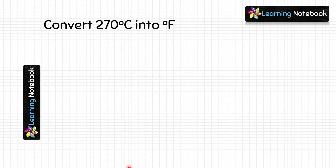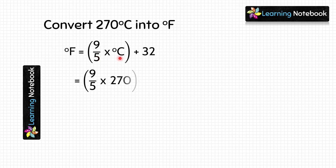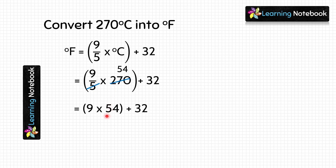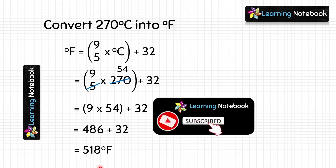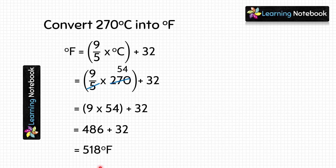Last question: convert 270 degree Celsius into Fahrenheit. Using the formula: 9/5 × 270 + 32. Simplifying: 9/5 × 270 gives 9 × 54, which equals 486. Then 486 plus 32 equals 518. So the answer is 518 degree Fahrenheit — that is, 270 degree Celsius equals 518 degree Fahrenheit.